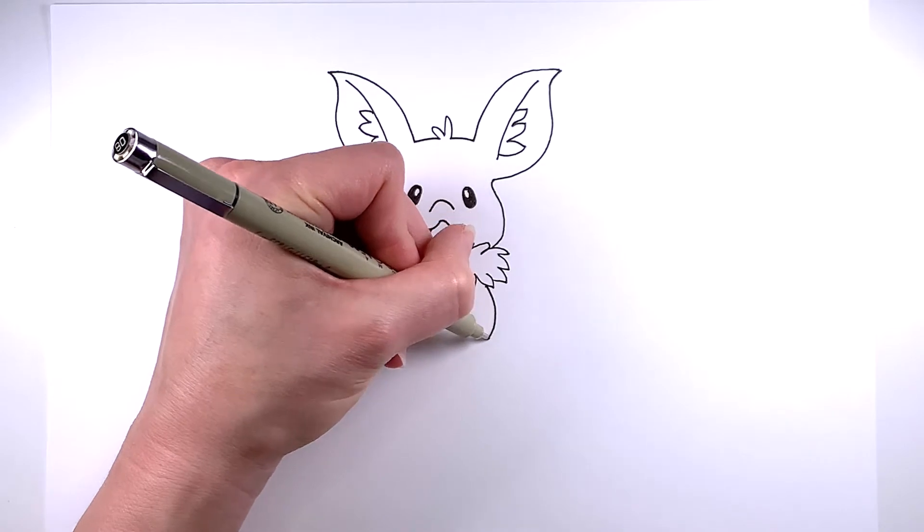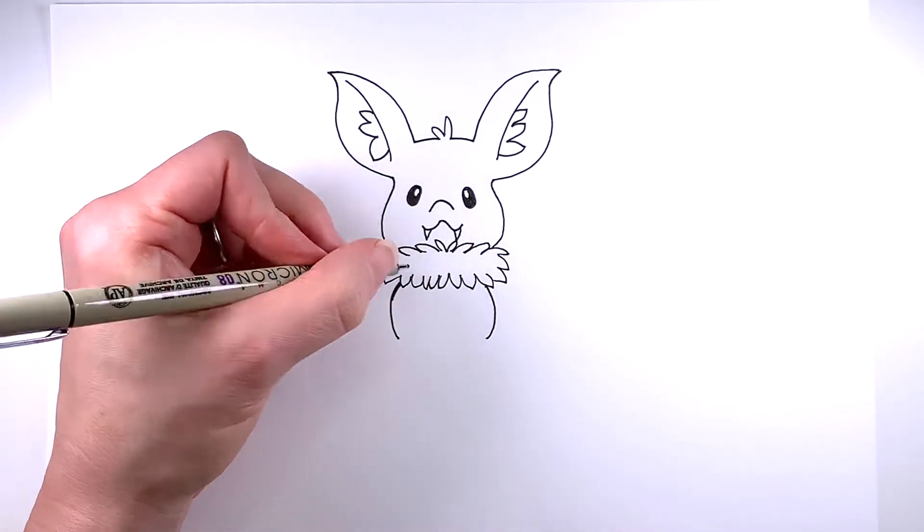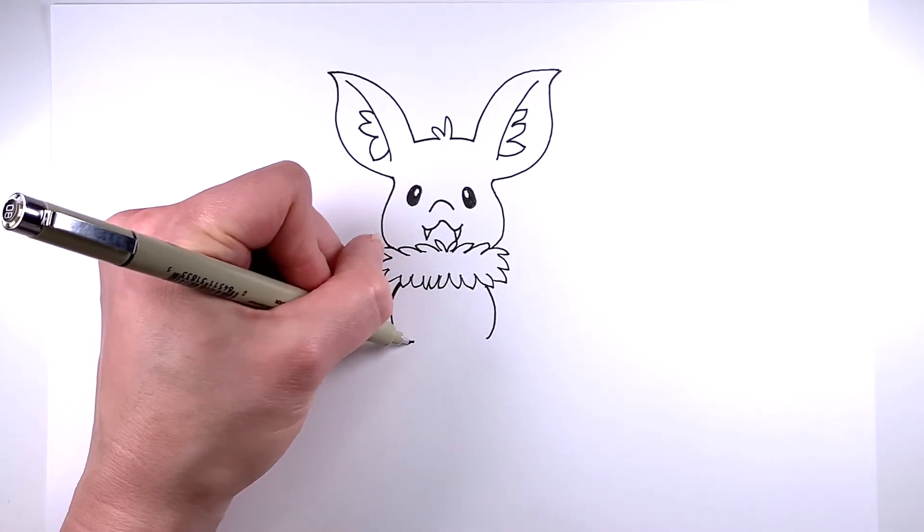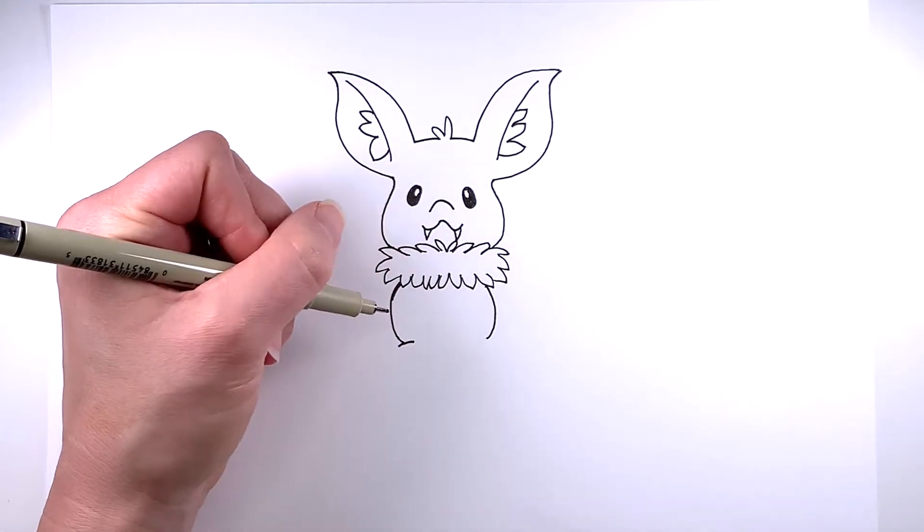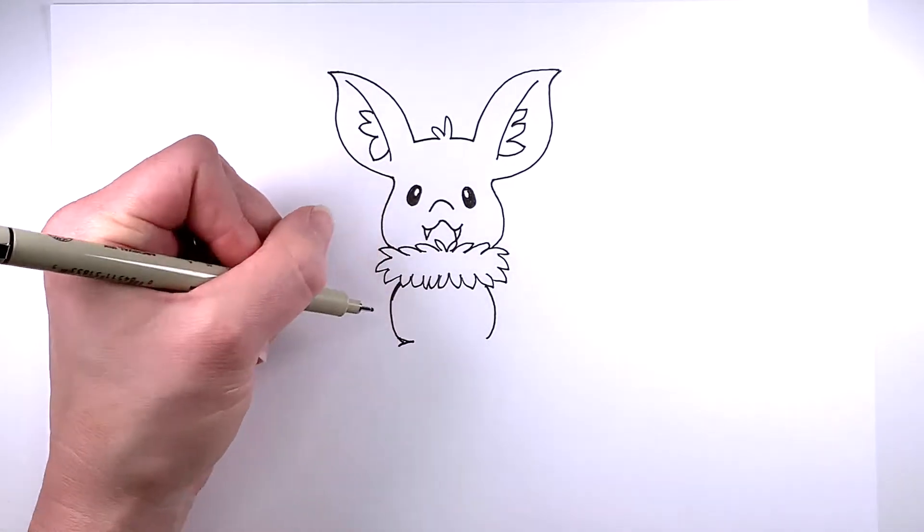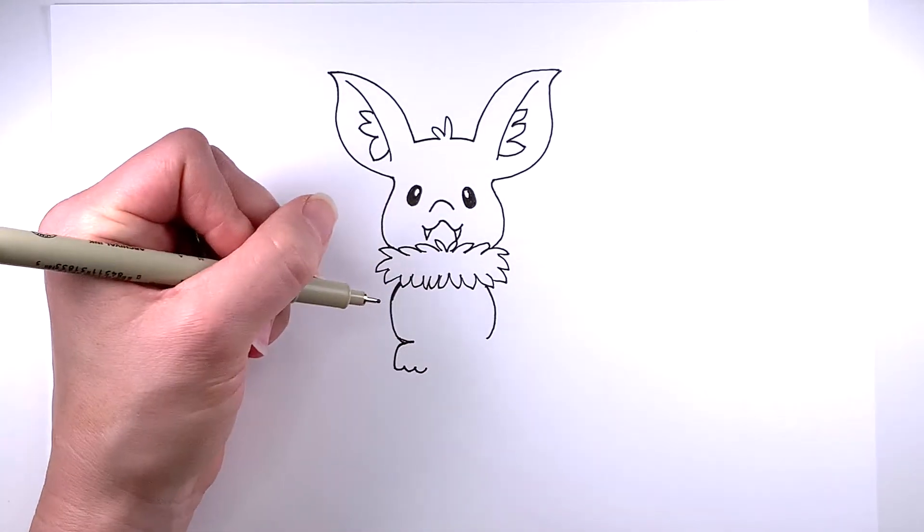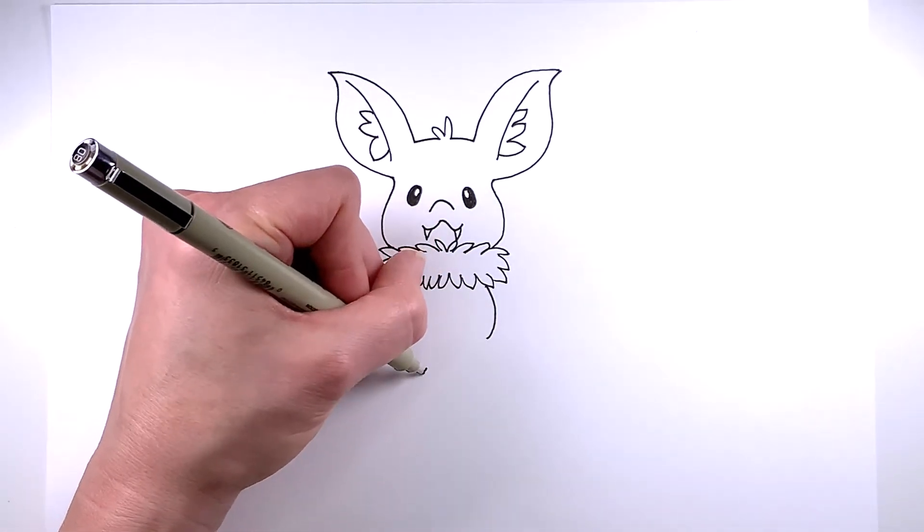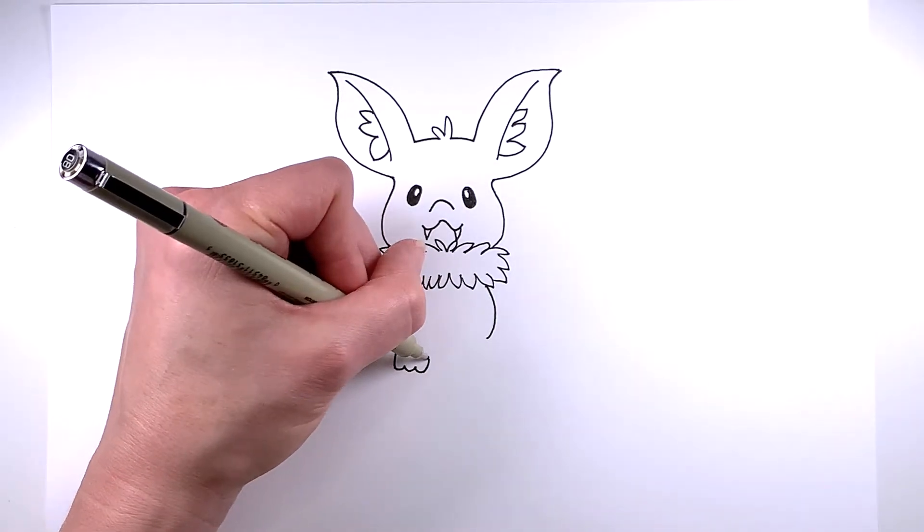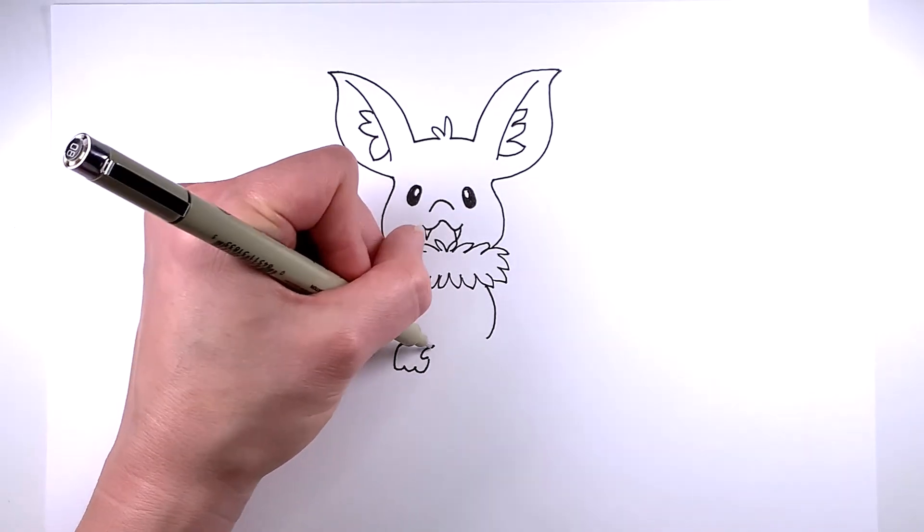And then now for the feet, just a short line there coming out from one side of the body and then bending it downward. And now for the toes, just three little waves right there. And then I'm going to form a little hook for his toes there.